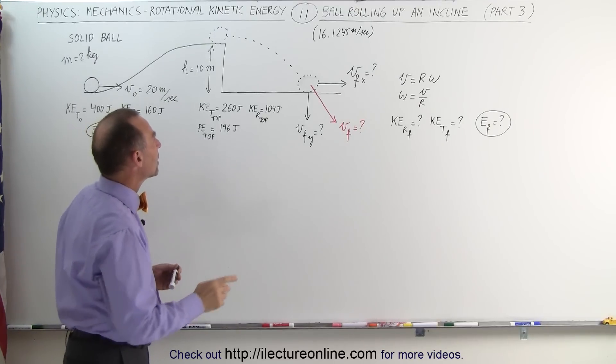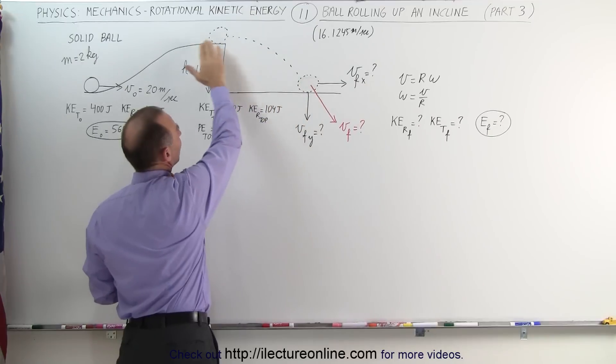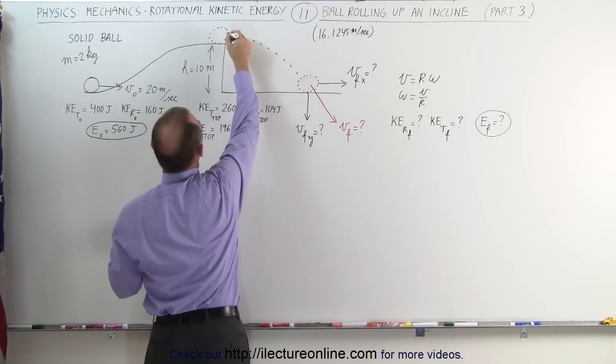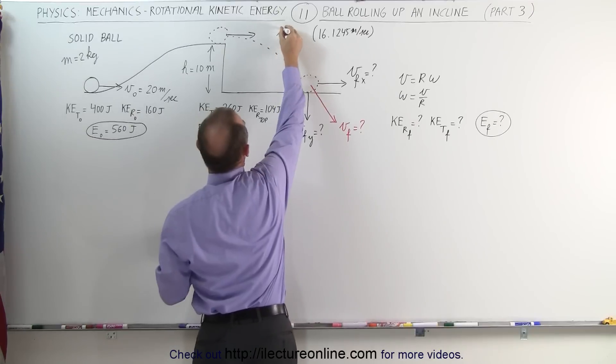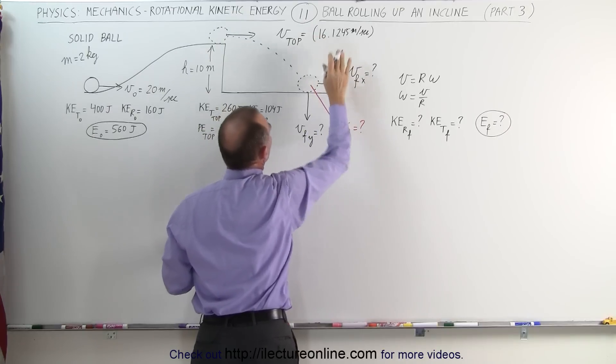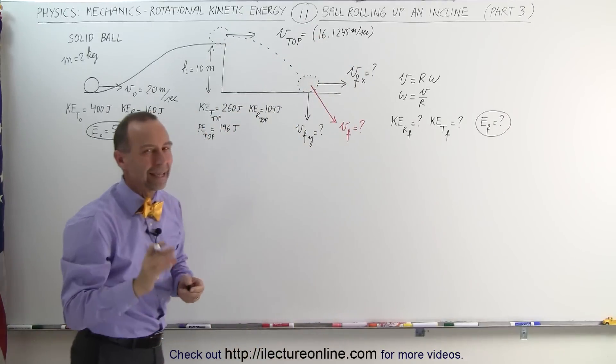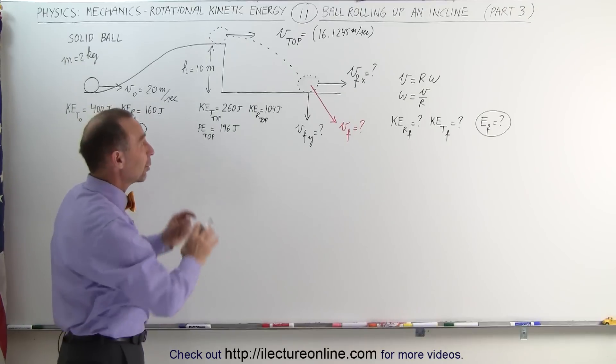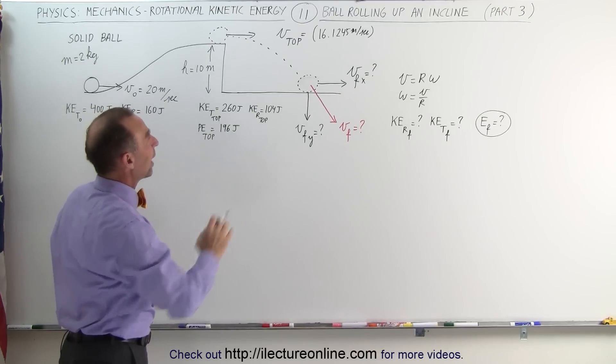First of all, what we're going to do here is treat this as a projectile motion. We have an object that's moving off the cliff. V at the top, we found in the previous video, was equal to 16.1245 meters per second. I kept a few extra significant figures there. Well, they're not really that significant, but we keep them there so we don't have a round-off error.